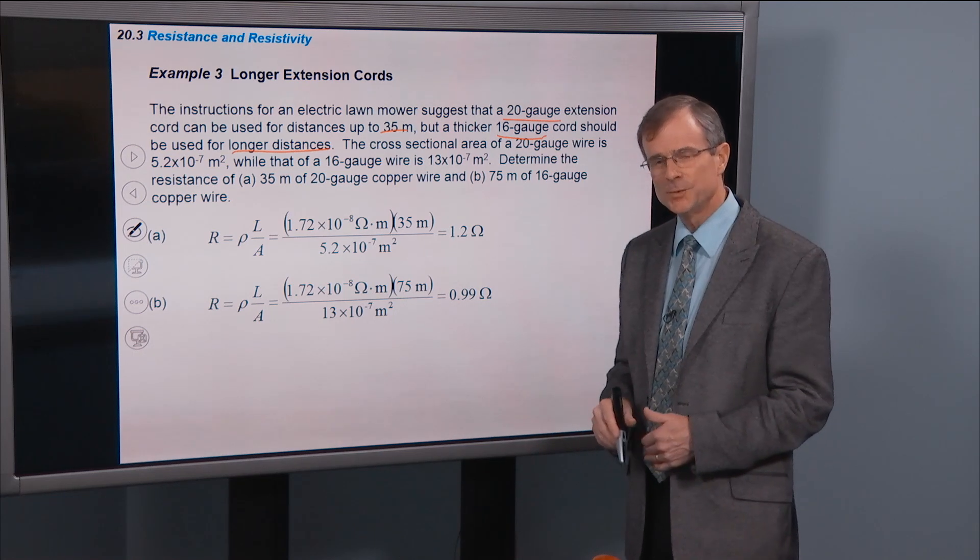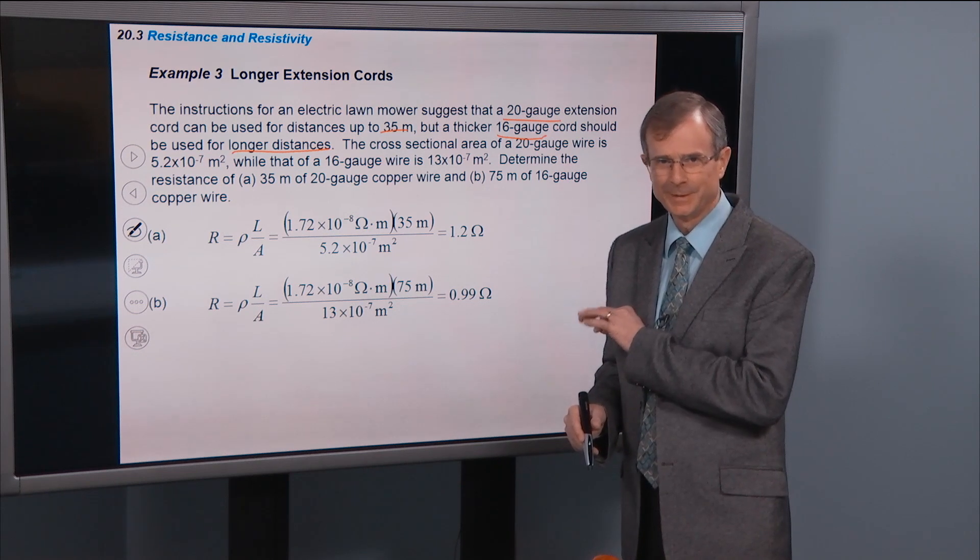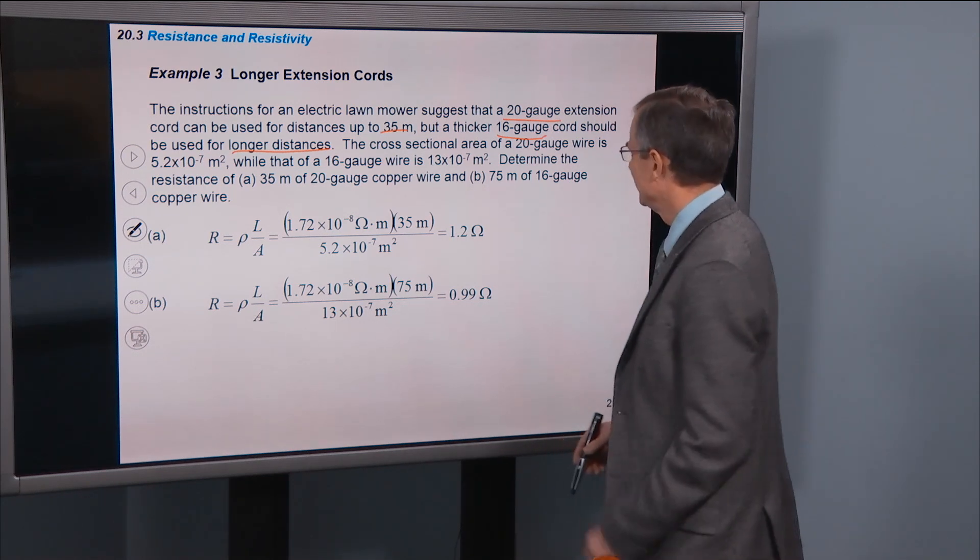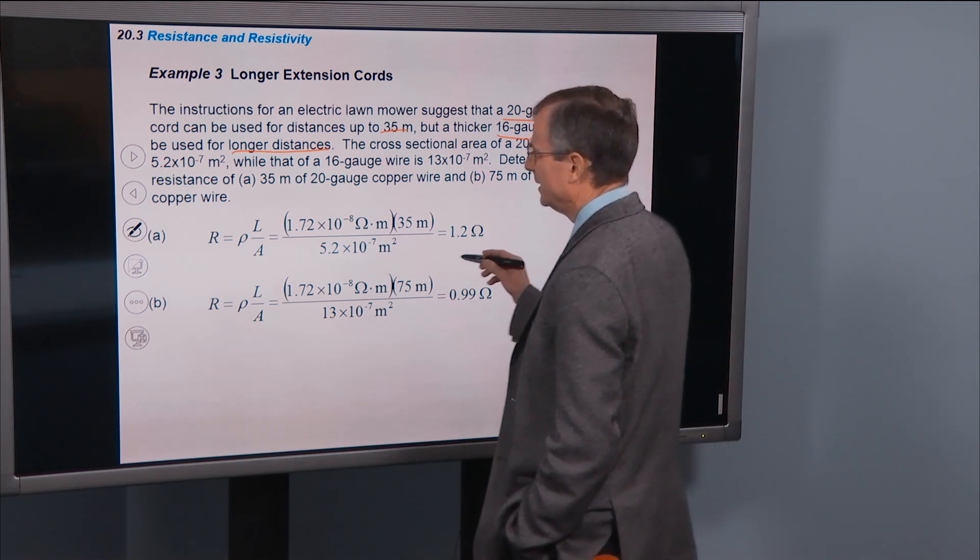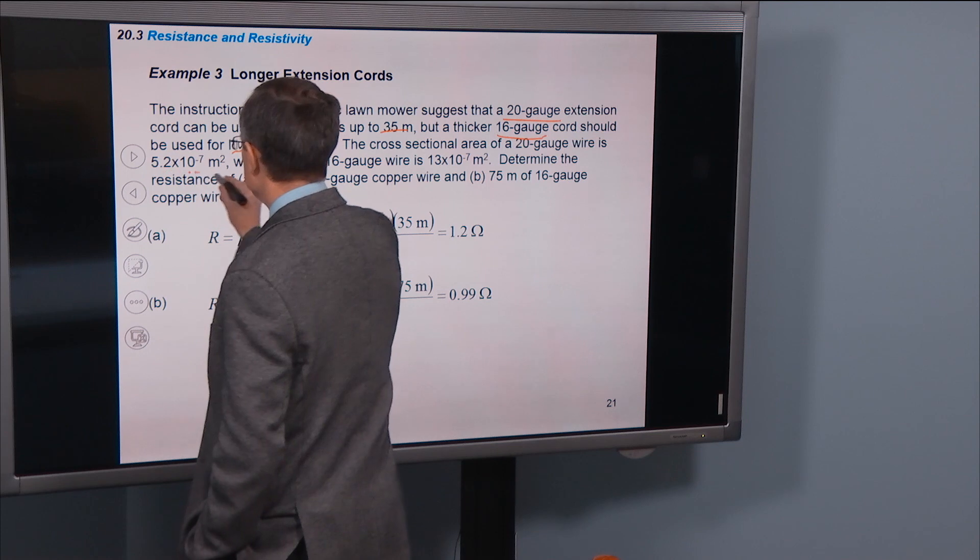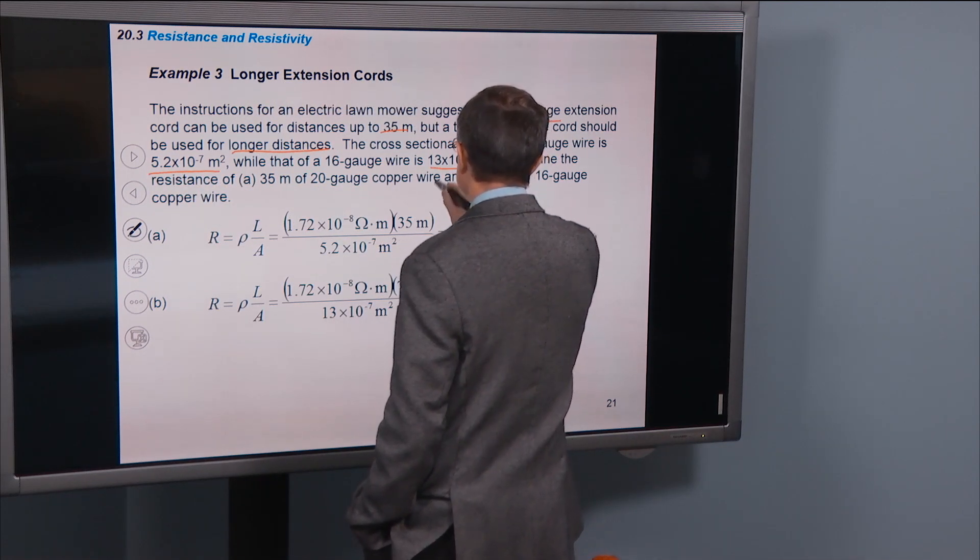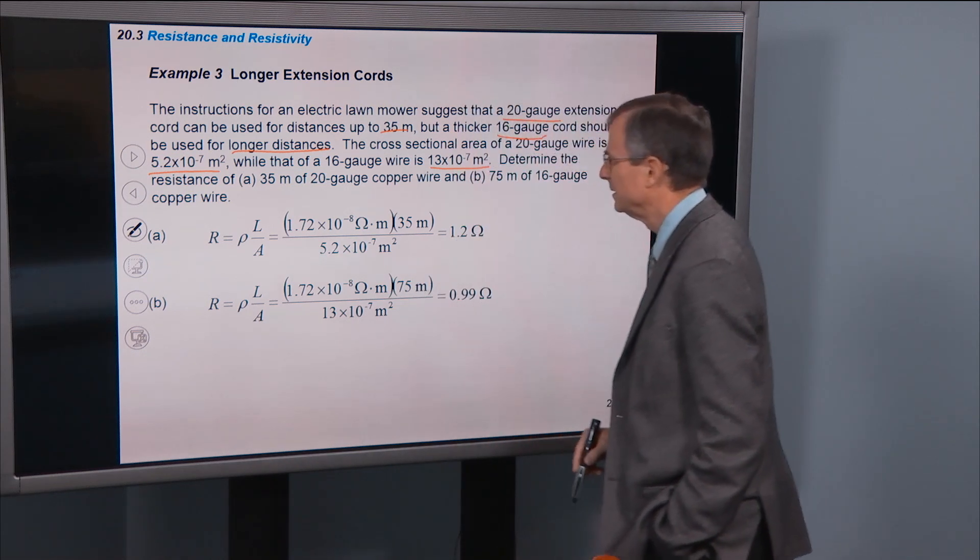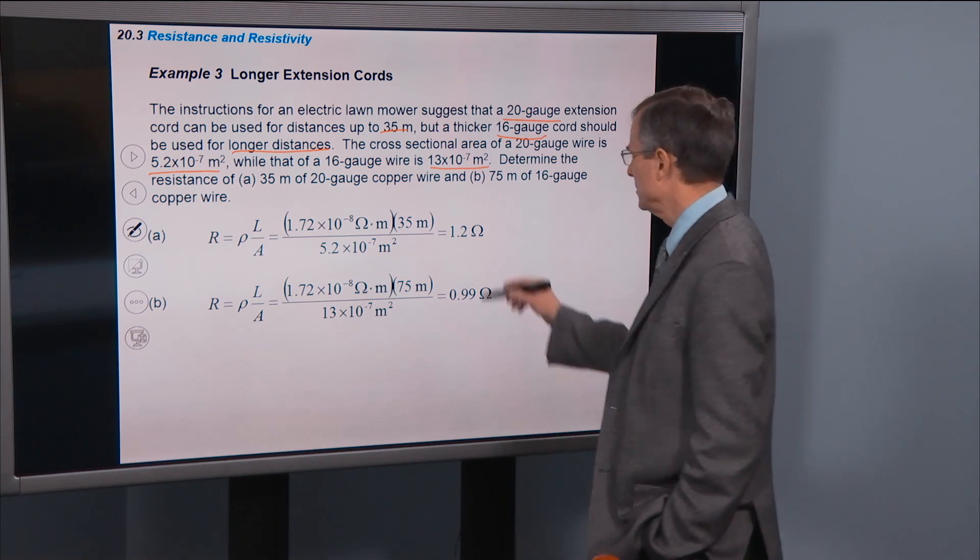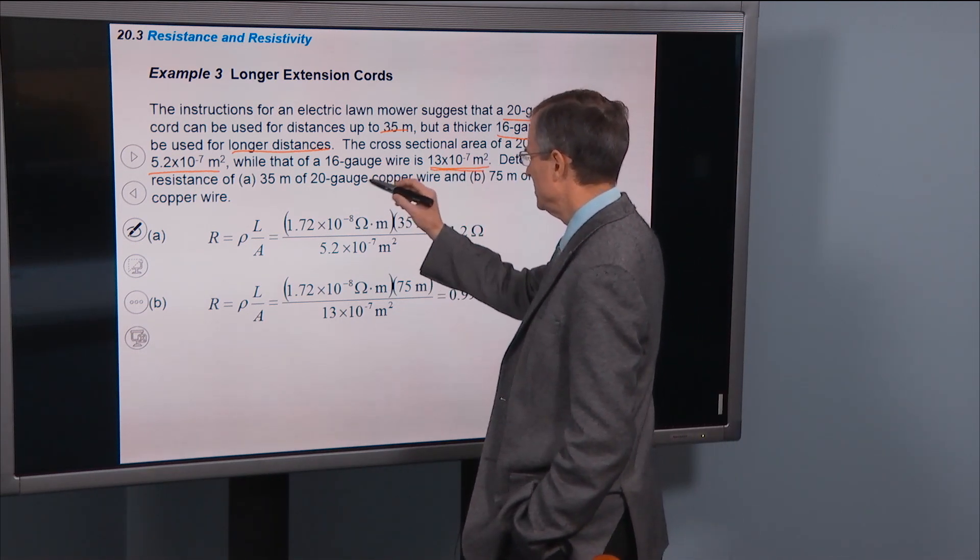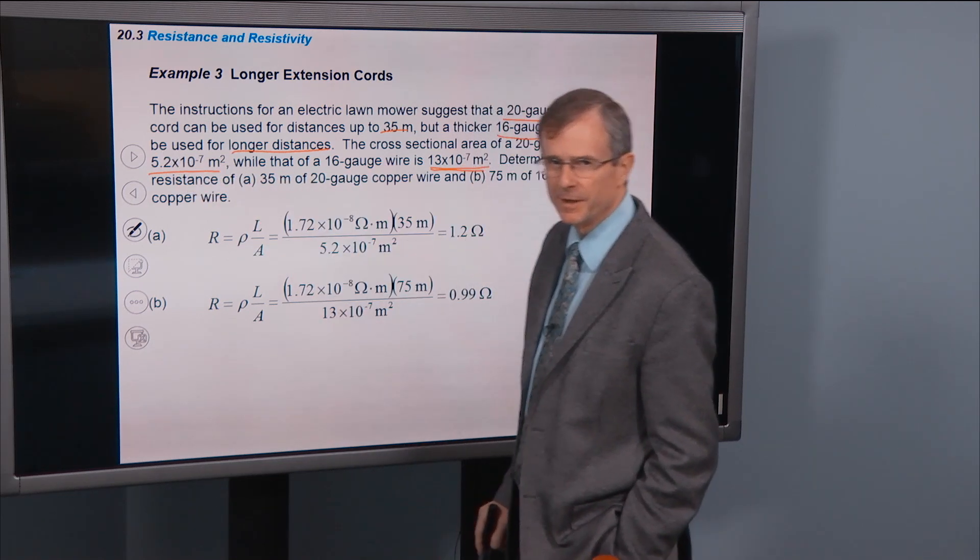The gauge is, as the gauge numbers go up from 16 to 20, the wire gets thinner and thinner. Sorry about that. It's not my fault. That's the convention. So cross-sectional area of a 20 gauge wire is 5.2 times 10 to the minus 7 square meters. Whereas 16 gauge is 13 times 10 to the minus 7 square meters. That's the cross-sectional area. So this number clearly for the 16 gauge is larger than the cross-sectional area for the 20 gauge.